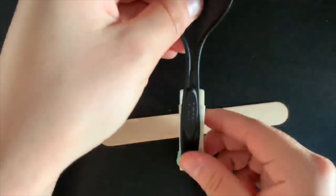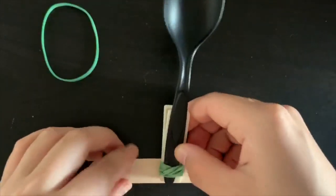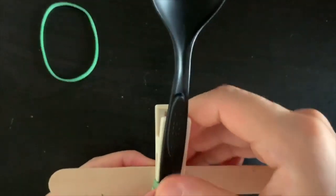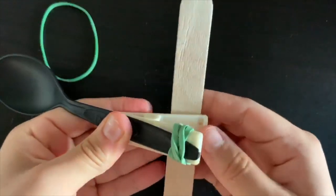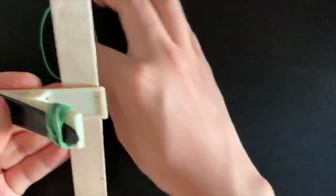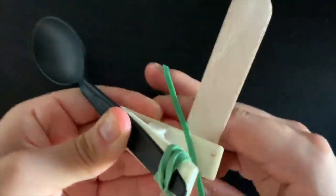Next you're going to place your popsicle stick perpendicular to the clothespin and spoon and then you're going to tie your last rubber band around that. And now this time you're going to tie it around the bottom clip of the clothespin.